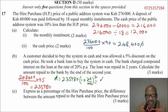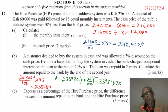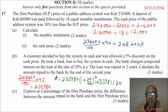Computing that on your calculator, you get 339,811.20 shillings. That is the total amount of money repaid to the bank.